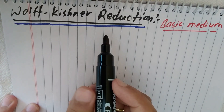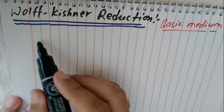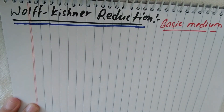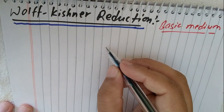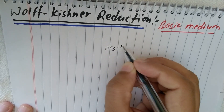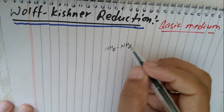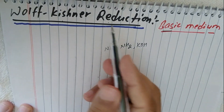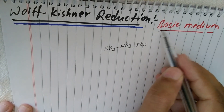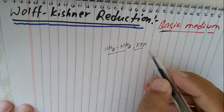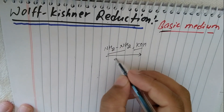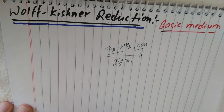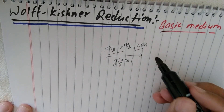In Wolff-Kishner reduction, the aldehyde or ketone is treated with hydrazine (NH₂NH₂) and KOH — that is, in basic medium. So Wolff-Kishner reduction is carried out in basic medium using hydrazine and KOH, and the solvent used is glycol. When heated, it gives the corresponding alkane.